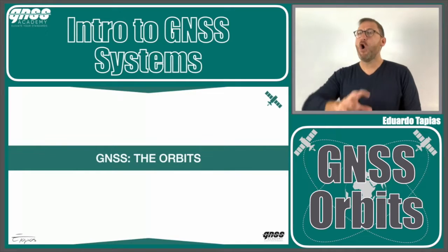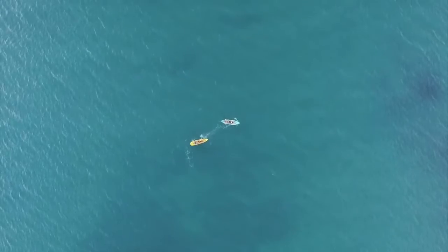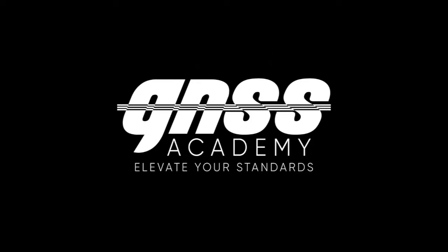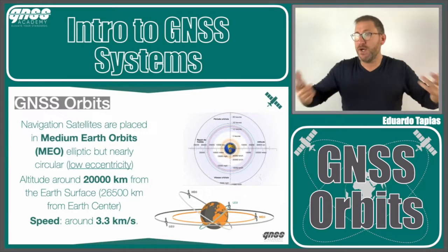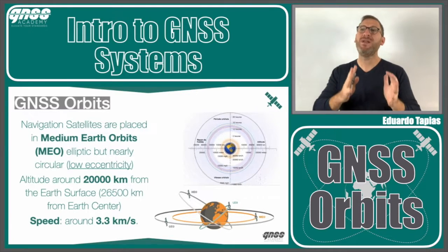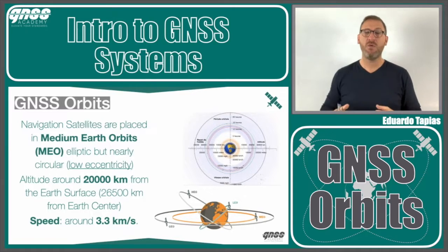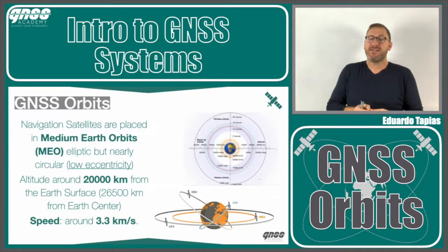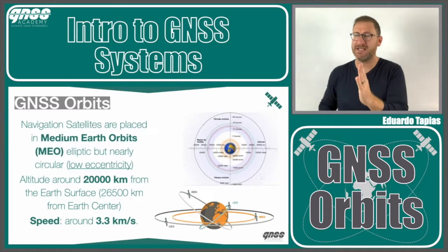Let's talk a little bit about the orbits. GNSS orbits are orbiting the Earth at 20,000 kilometers height from the Earth's surface. This is what we call the medium Earth orbits. From the Earth's center, it's something like 26,500 kilometers for the GPS constellation. We'll see the details later on.